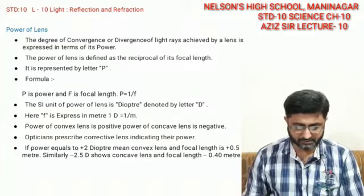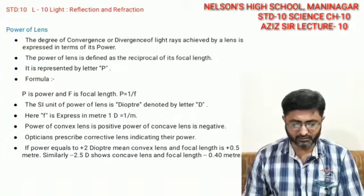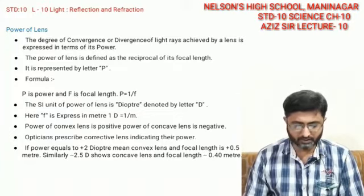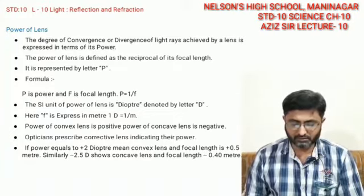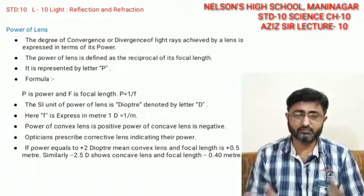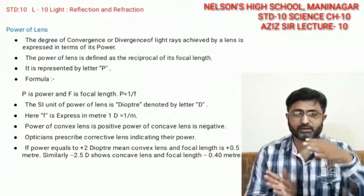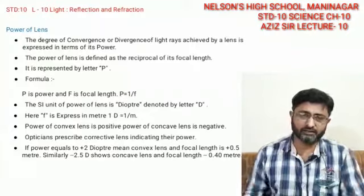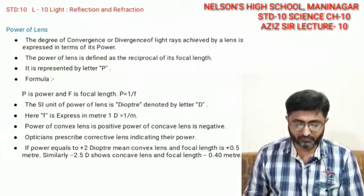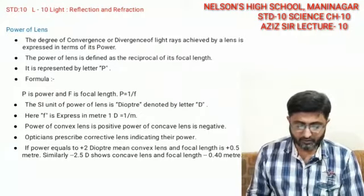Now, what is basically power of lens? The power of lens is actually the degree of convergence or divergence. The converging lens is basically a convex lens, and the diverging lens is a concave lens. So light rays which diverge or converge — how much degree they diverge or converge — this is expressed in terms of power.